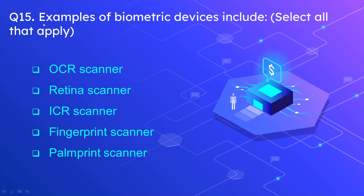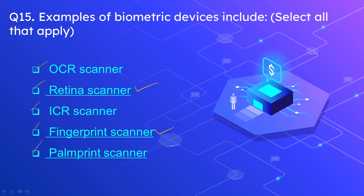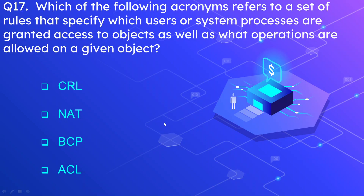Question number 15: Examples of biometric devices include — select all correct options. Options are: OCR scanner, retina scanner, ICR scanner, fingerprint scanner, and palm print scanner. The correct options are retina scanner, fingerprint scanner, and palm print scanner, as these are all biometric devices.